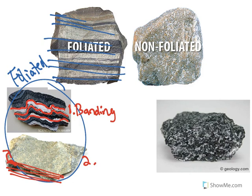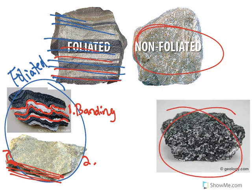The other type, non-foliated, would be every other type of rock. Anytime you don't see these lines, we're dealing with a non-foliated rock — no particular pattern, no lines, no alignment at all. This would be considered a non-foliated rock.